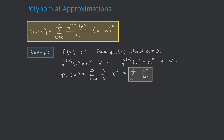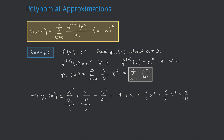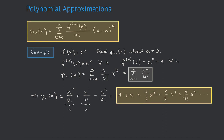Writing this out explicitly: pn(x) equals x to the 0 over 0 factorial plus x to the 1 over 1 factorial plus x squared over 2 factorial, and so on — which simplifies to 1 plus x plus one-half x squared plus one over 3 factorial times x cubed plus one over 4 factorial times x to the fourth, and so on. A graphical visualization of this sequence of functions is exactly what we already looked at in the beginning. So that's it on the topic of Taylor approximation in this video. Thanks for watching and see you next time.